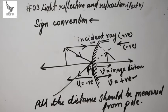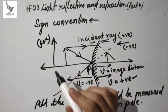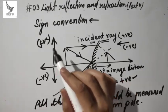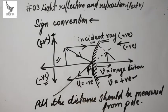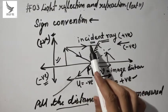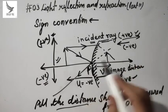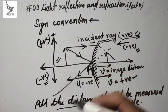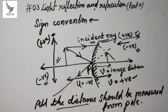The last sign convention rule: any height above the principal axis is taken as positive, and any height below the principal axis is taken as negative. So to summarize: all distances are measured from the pole; distances along the incident ray direction are positive, opposite are negative; heights above the principal axis are positive, below are negative. In the next lecture, we will solve some numericals related to concave and convex mirrors. Till then, keep learning — see you in the next lecture.